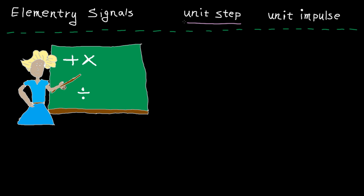Let's start with the unit step function. We usually represent this function by u of t — u obviously stands for unit. As the name shows, this function is like a step. This signal is 0 for t less than 0, and 1 for t equal to or greater than 0.